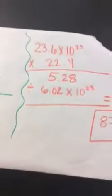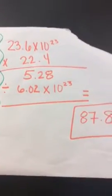And then you have to divide that by 6.02 times 10 to the 23rd, and that equals 87.8 liters. Thank you.